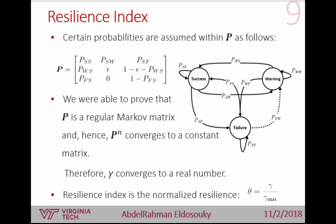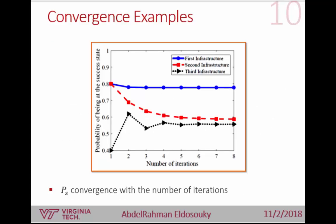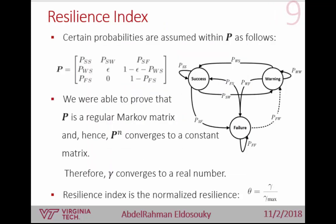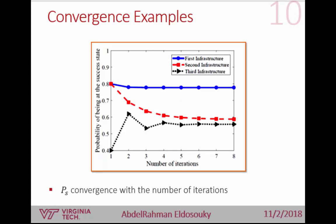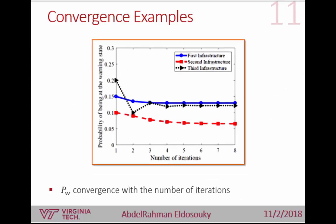To illustrate convergence, we ran simulations with three different infrastructures having different starting probabilities — one starting with higher probability of being in success state, one in warning state, and one in failure state. We found that after about four to six time steps, all probabilities converge to the constant value we are targeting. We show the probability of success and warning state over time steps.